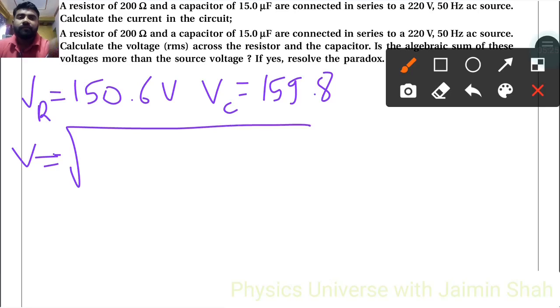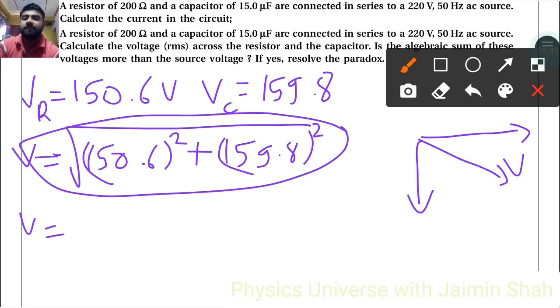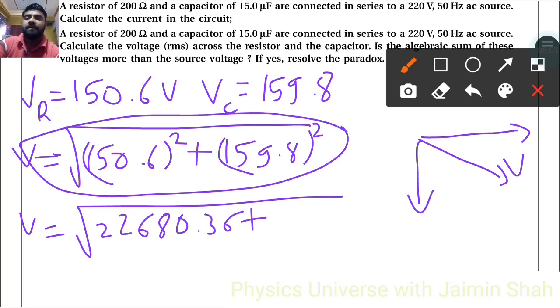I have to write 150.6 square plus 159.8 square. Why? Because resistance voltage by phasor diagram is always x direction and capacitor by phasor diagram is always downward direction, so resultant will be here. V equals under root 150.6 square, that is 22680.36, plus 159.8 into 159.8, that is 25536.04. So under root of that answer, V equals 219.58, that is our source voltage.